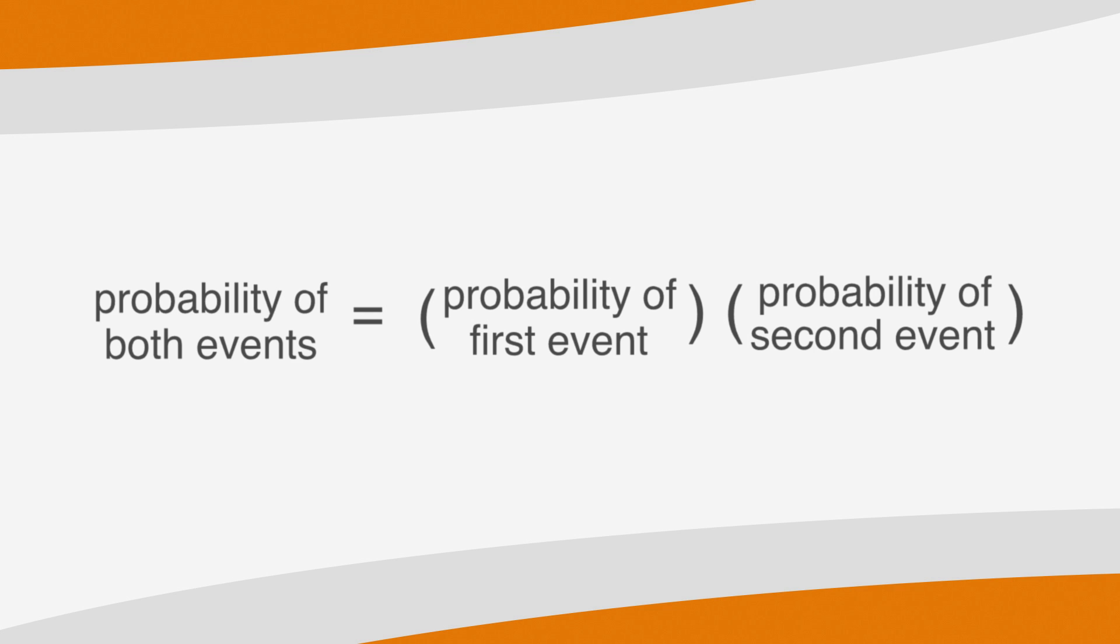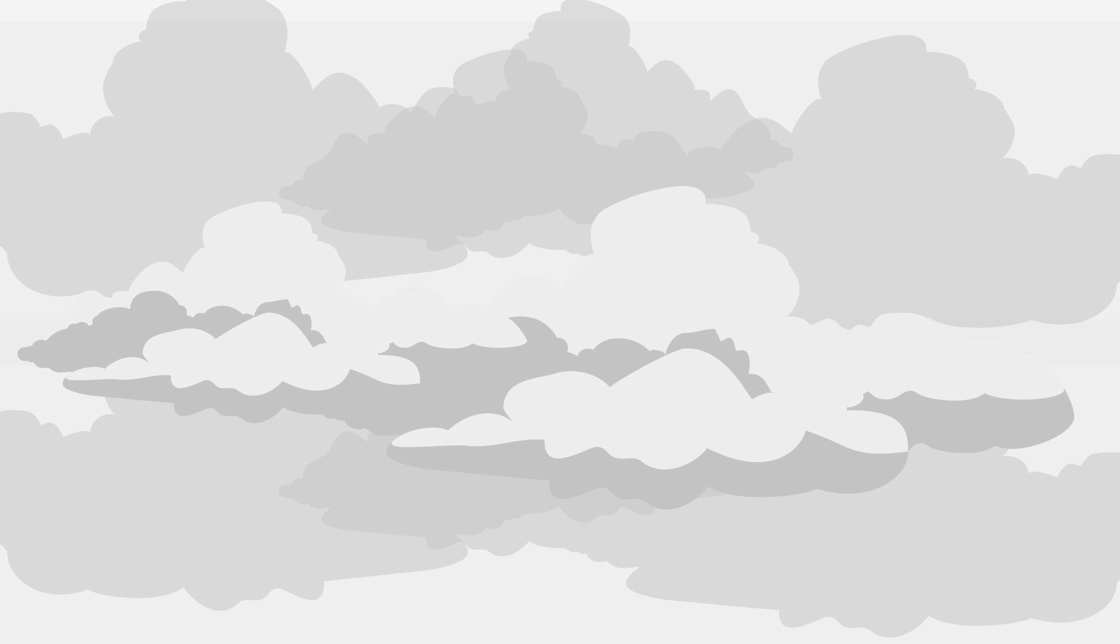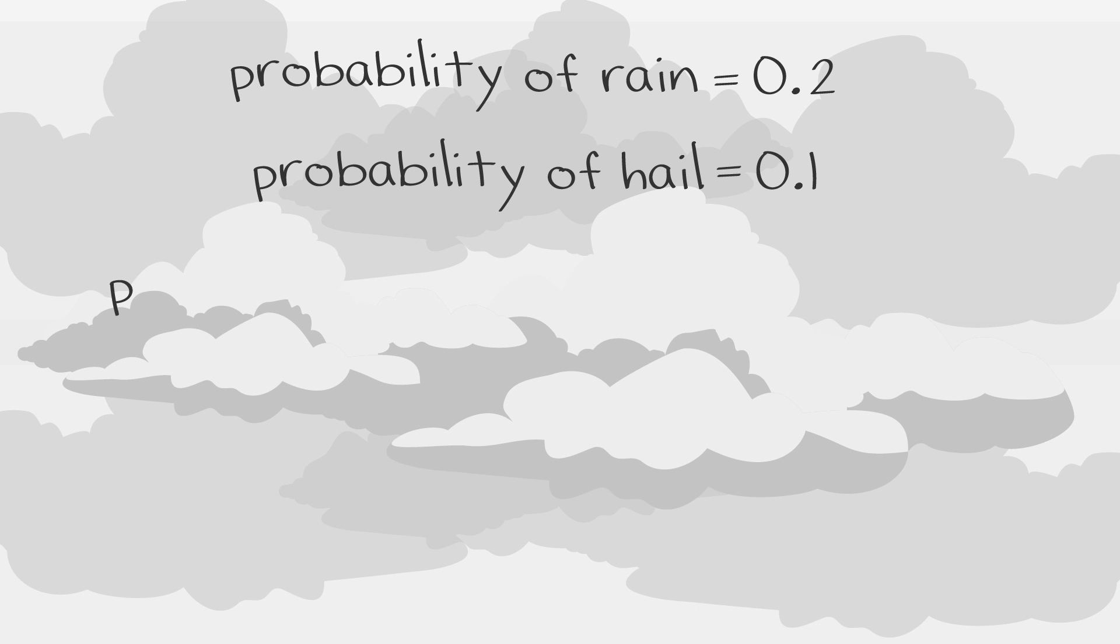You'll use this equation when you're given a probability question with the word AND, which means that we want two events to happen together. For example, if the probability of rain is 0.2 and the probability of hail is 0.1, the probability that it will both rain and hail is equal to 0.02.